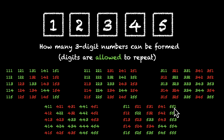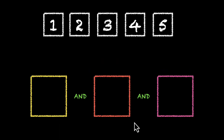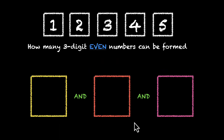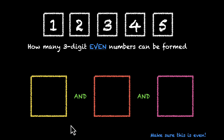And these are your 125 numbers. Now only some of them will be even. So how do we figure out how many of them are even? Coming back to the problem, we want to find 3-digit even numbers. We have these 3 digits, and we have to make sure that this number is even.